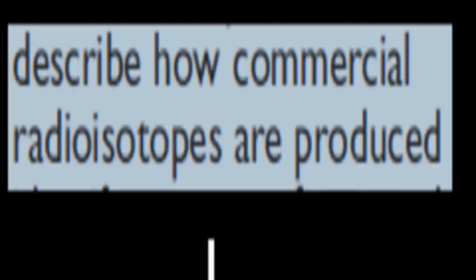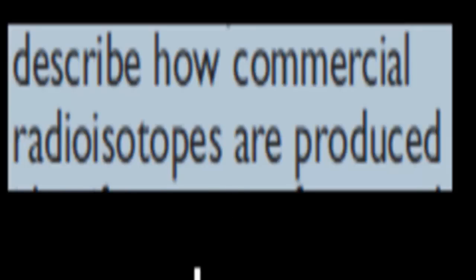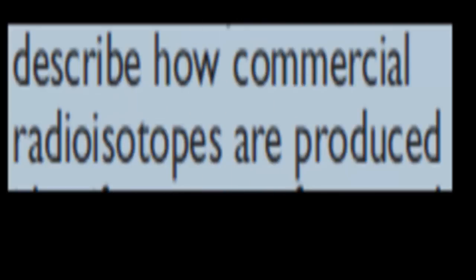Welcome back. In the last video, we talked about how transuranic elements are produced. Remember, a transuranic element was anything with the atomic number greater than uranium — greater than 92. And in this video, we're going to cover the next topic, which is: describe how commercial radioisotopes are produced.